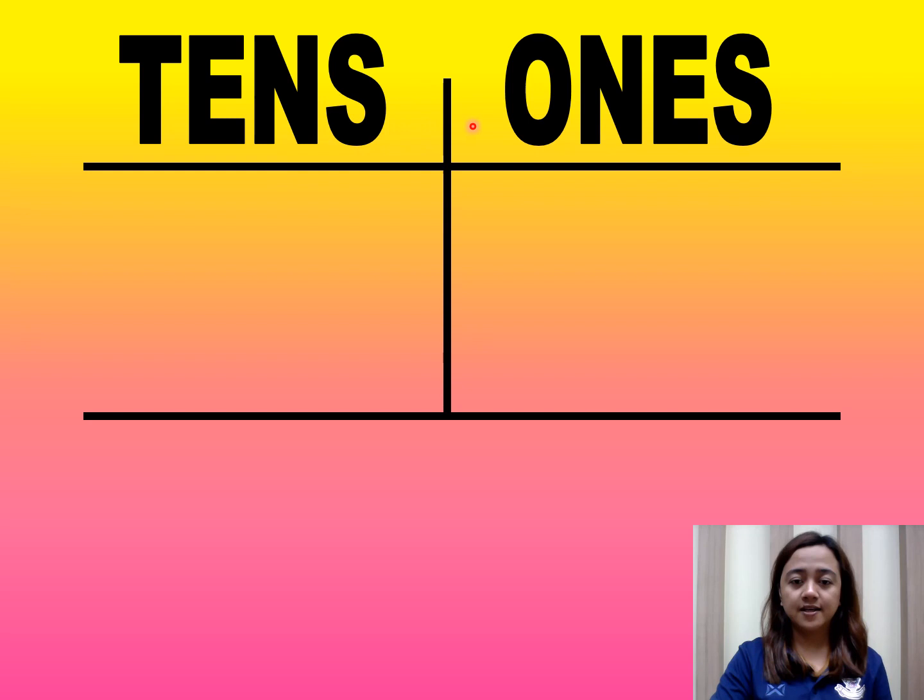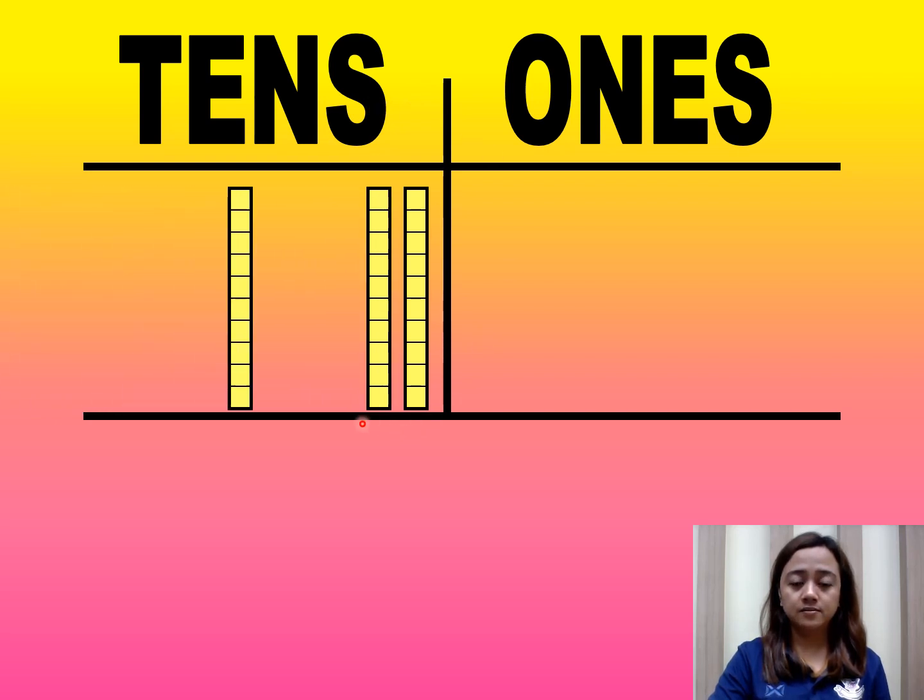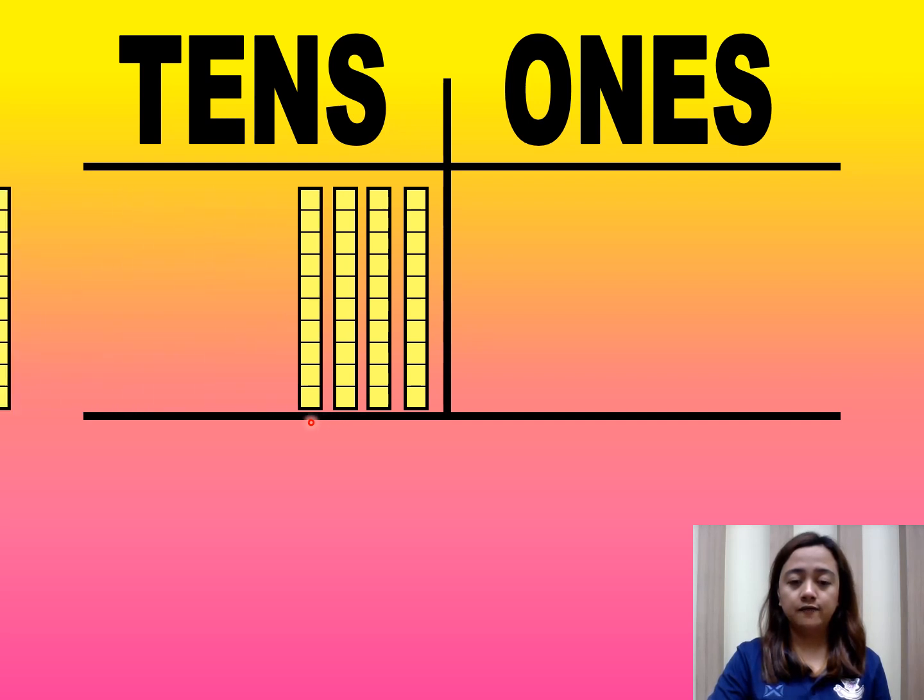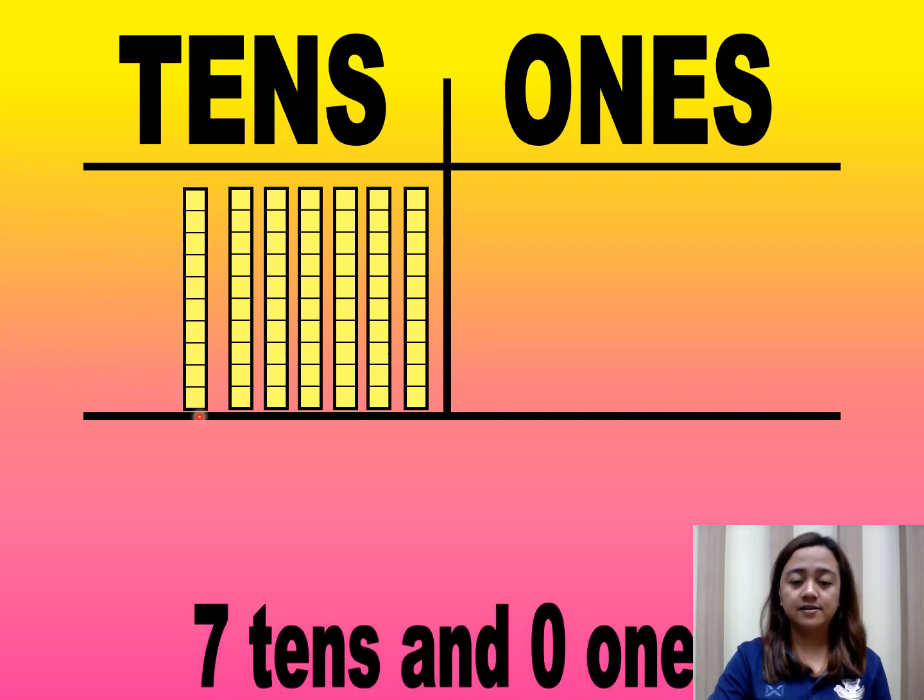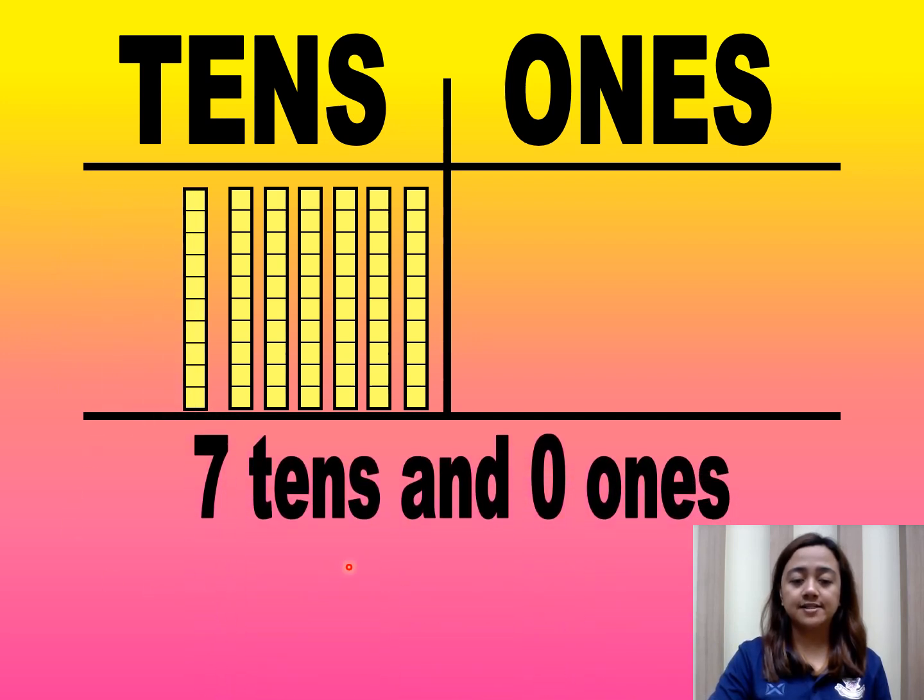Tens, ones. So in ones, we have zero. Tens, one, two, three, four, five, six, seven. So seven tens and zero ones.